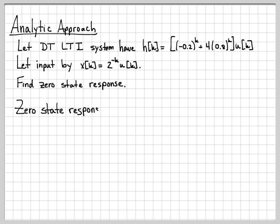Well, we know how to do that. We know that the zero state response is given by the convolution of the input with the impulse response. So this output y(k) is just the convolution of x and h.